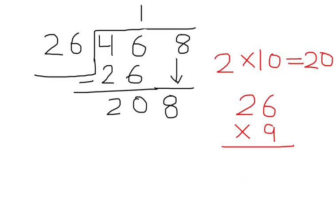Let's try 26 multiplied by 9. 9 times 6 is 54, put 4 here and 5 carries. 9 times 2 is 18, plus 5 is 23. We have 234, but 234 is still greater than 208, so we have to try one more time.